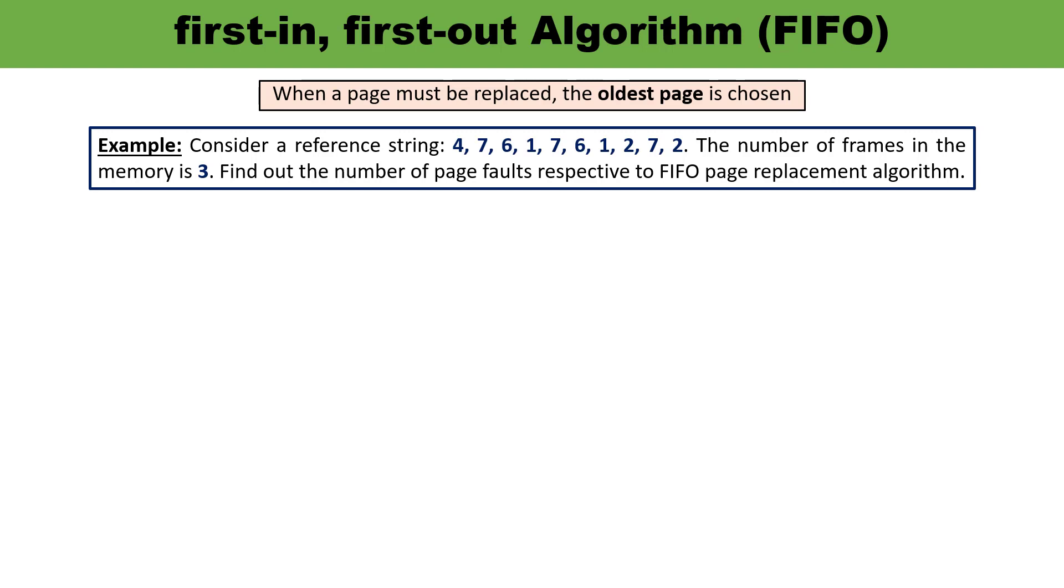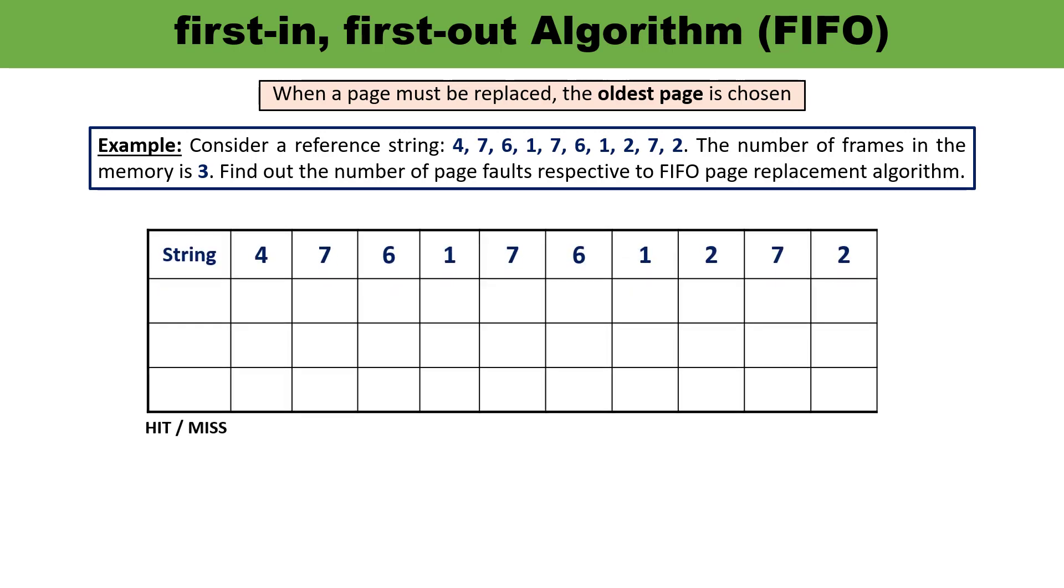Here number of frames is three, means you have to take three rows. If the number of frames were four you have to take four rows. So let us plot three rows. You can insert one by one column but I've drawn a table first.